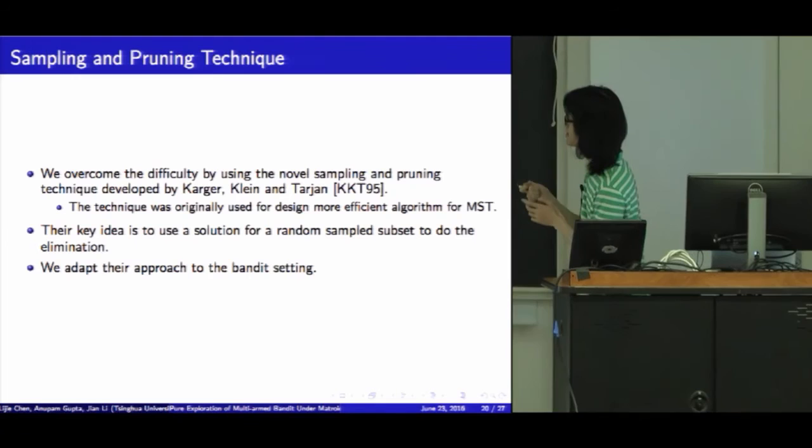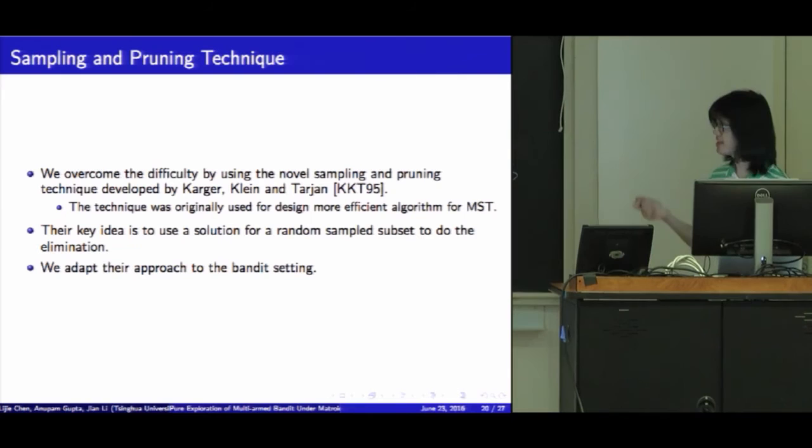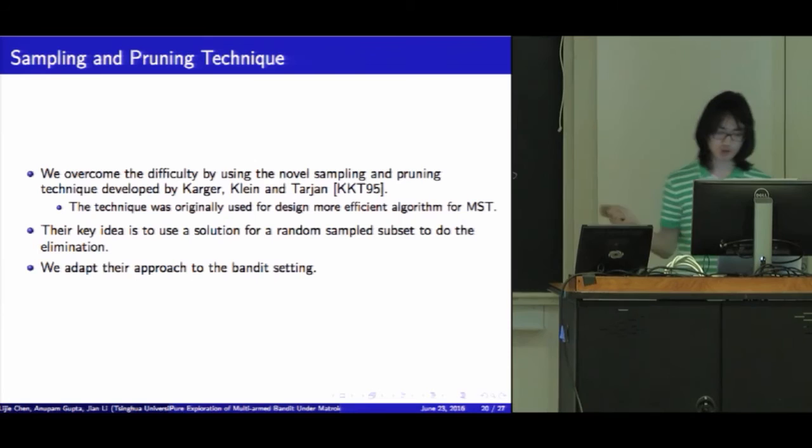We overcome this difficulty by using the random sampling and pruning technique developed by Karger, Klein, and Tarjan. This is originally used for designing efficient algorithms for MST. The key idea is to use the solution for a random sample subset to do the year elimination. We adapt their approach to the bandit setting.